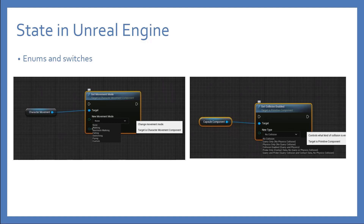For example, in this image, I get the character movement component and set the movement mode from walking to falling to swimming to flying. Also for the capsule component, I'm setting the collision. Anything you see as an enum is considered changing the state of this class, this object. Everything is a class — the character movement is a class, the capsule component is a class created in C++.